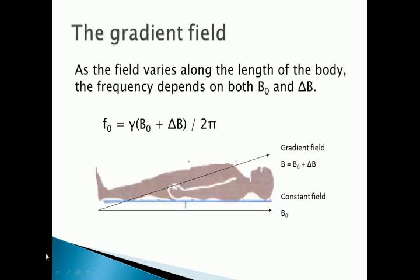Here's a diagram of that. We have a patient with a large constant field, and the field gradually increases as we go through the body — that's called the gradient field. The total magnetic field is made up of the constant field B0 and the gradient field Delta B, and those add up to produce a magnetic field B that depends on the point in the body being imaged. The frequency of precession will now be gamma times (B-naught plus Delta B) divided by 2 pi.